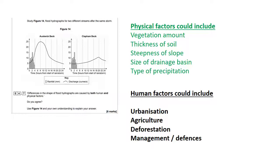A bigger drainage basin means water is likely to reach the river more slowly because it could fall in many different areas within that basin. A smaller drainage basin means water rushes in much faster with less chance to infiltrate. For type of precipitation, snow initially means less chance of flooding because snow itself stores the water. The issue comes when the snow melts — if it melts, the soil is often frozen and impermeable, so water rushes to the river all at once, potentially causing a very rapid rising limb.